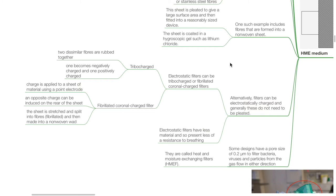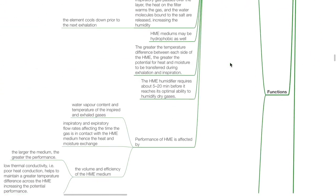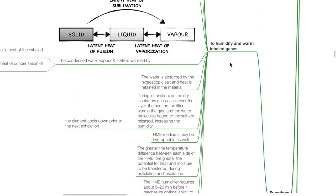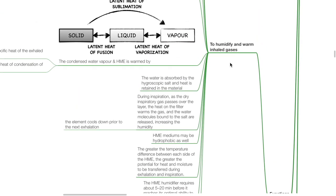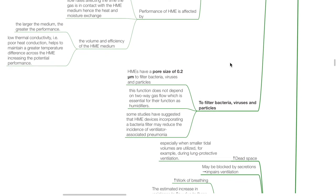Some HME designs have a pore size of 0.2 micrometers to filter bacteria, viruses and particles from the gas flow in either direction; these are called heat and moisture exchanging filters. Functions of the HME include humidifying and warming inhaled gases, and filtering bacteria, viruses and particles.